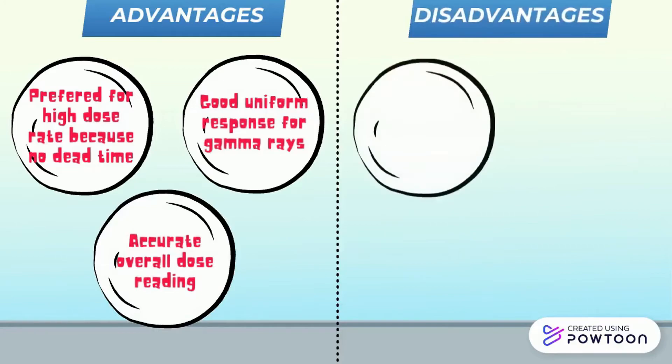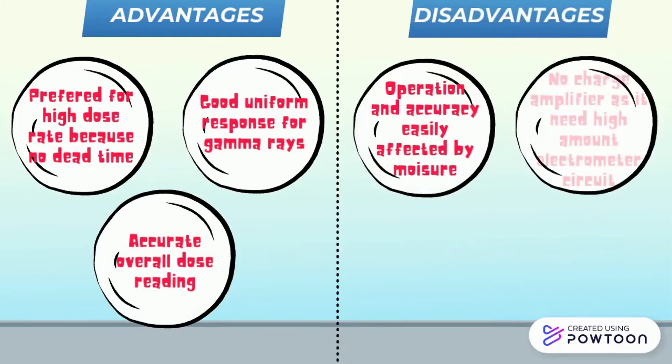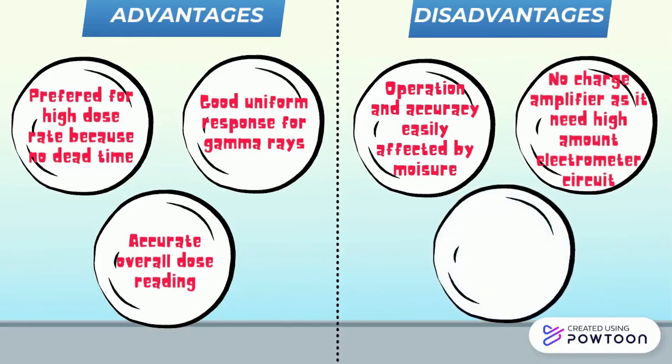The disadvantages of ionization chamber. First, operation and accuracy easily affected by moisture. Second, no charge amplifier as it needs high amount electrometer circuits. Third, requires very thin filter for alpha and beta rays.